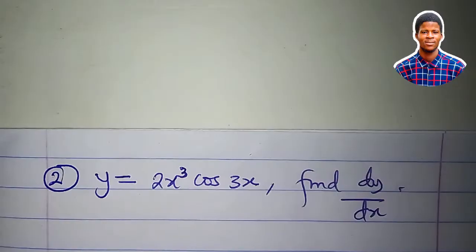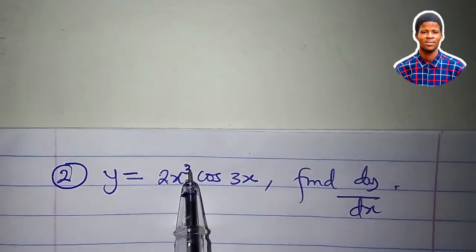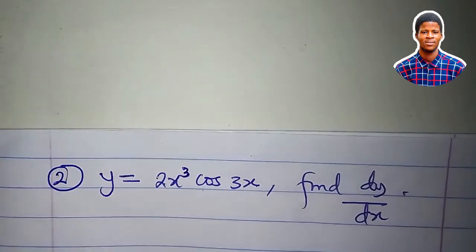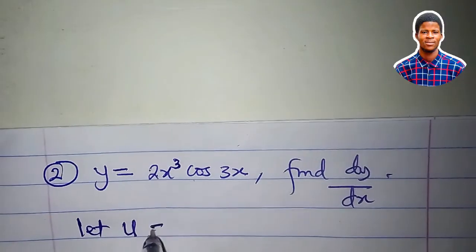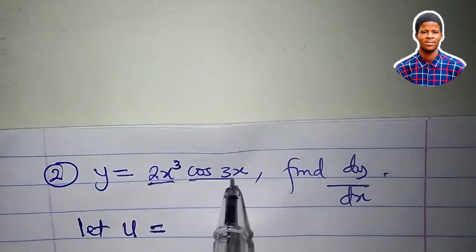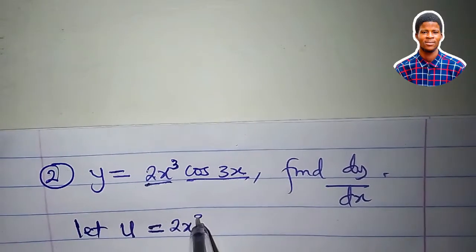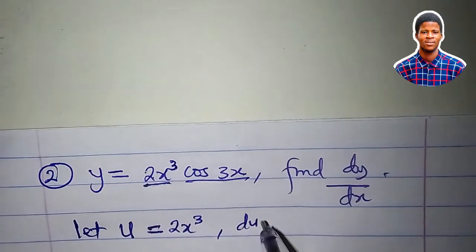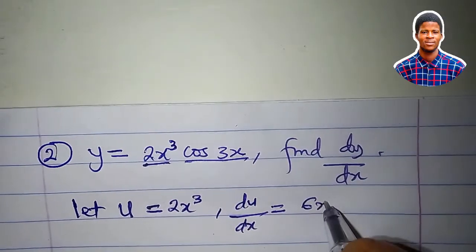Let's apply the rule again to get the derivative of 2x³ cos 3x. So we can choose our u to be any of them. We have 2x³ and cos 3x. So let's choose u to be 2x³. And what would be du/dx?